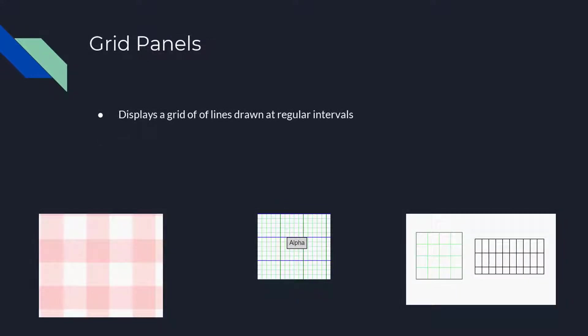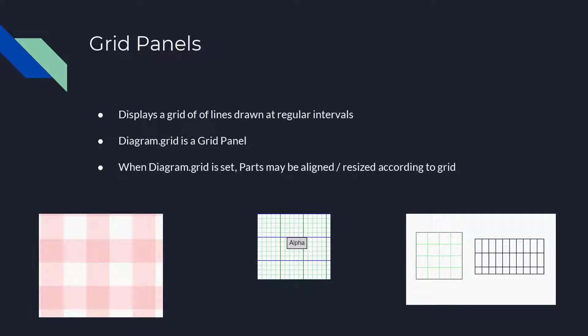Grid panels are used to display a grid of lines drawn at regular intervals. Most often, a grid is applied to the whole diagram by defining the diagram.grid property, but a grid panel could also be used in a part definition. When diagram.grid is set, the grid is effectively infinite in extent. You may also force dragged parts to be aligned on grid points, and resize parts according to multiples of the grid cell size.